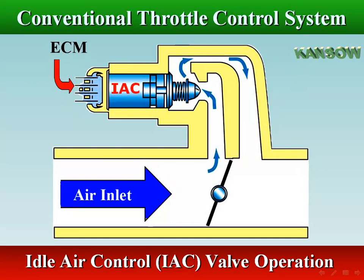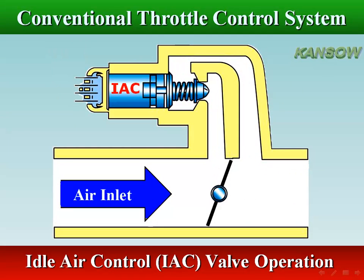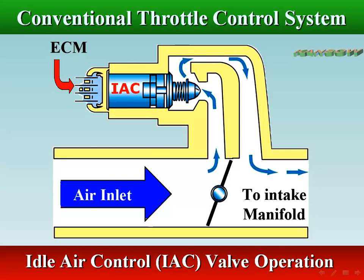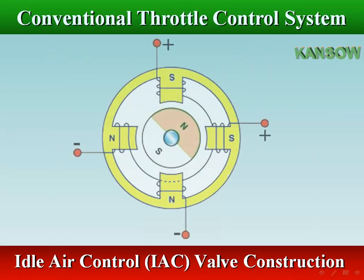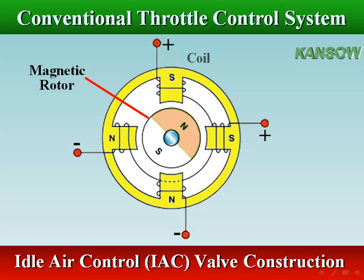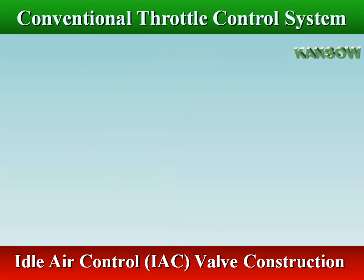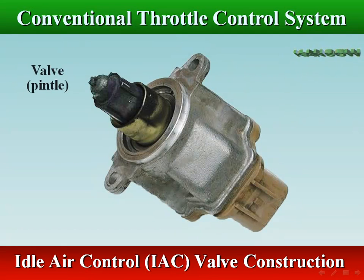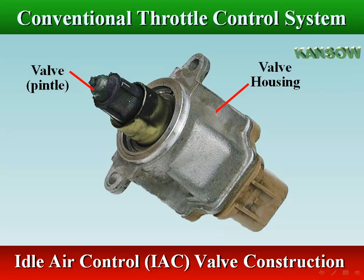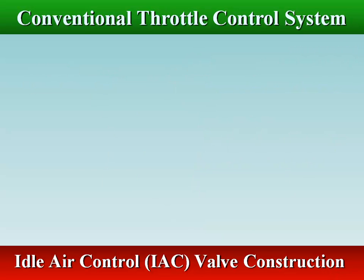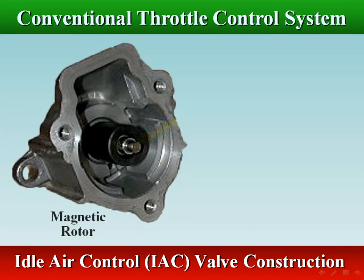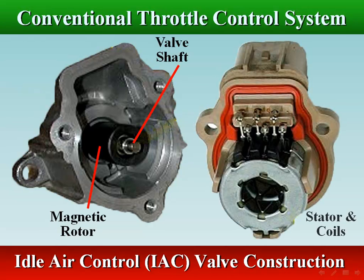As the valve steps increase, more air bypasses the throttle valve. The valve assembly consists of four electrical stator coils, a magnetic rotor, a valve pintle, and valve shaft. The valve shaft is screwed into the rotor so that as the rotor turns, the valve assembly will extend or retract. The direction of valve movement depends on the sequence by which the ECM energizes the coils.